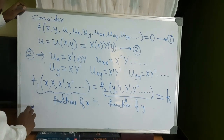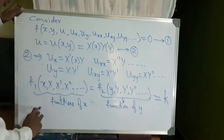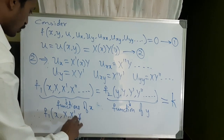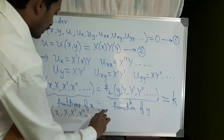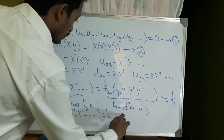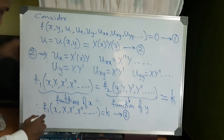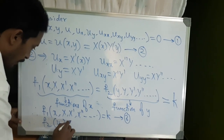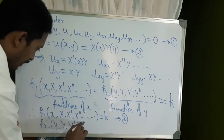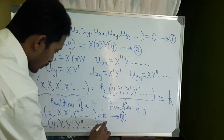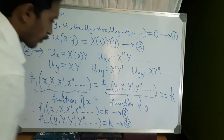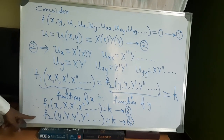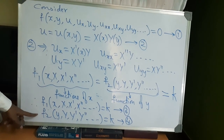Therefore, we have f1 of x, X, X', X'' and so on equal to a constant, which is equation 3. Then the function of Y, capital Y, and its derivatives equal to a constant, which is equation 4. Equations 3 and 4 have to be solved using one of the methods learned in first semester.